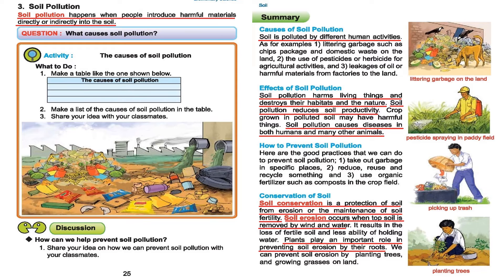Next are the effects of soil pollution. Soil pollution harms living things and destroys their habitats and nature. Soil pollution reduces soil productivity. Crops grown in polluted soil may contain harmful things. Soil pollution causes diseases in both humans and many other animals. It can destroy the habitat of insects and other animals, reduce soil productivity, and carry diseases for both humans and animals. In the picture on the right side you can see pesticide being sprayed in a paddy field, which can destroy the quality of the soil.